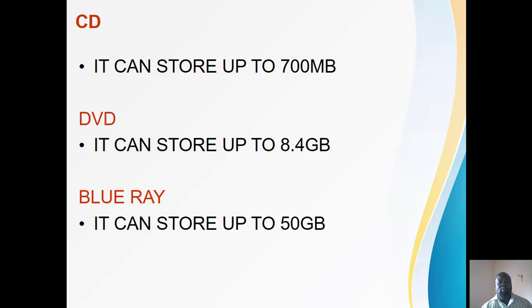These optical discs come in different sizes with different data capacities. The CD, also known as a compact disc, can hold up to 700 megabytes of data. The DVD can hold up to 8.4 gigabytes of data — anything beyond 700 megabytes goes onto the DVD. The Blu-ray disc, the largest of all, can hold up to 50 gigabytes of data — anything above 8.4 gigabytes is kept on the Blu-ray.